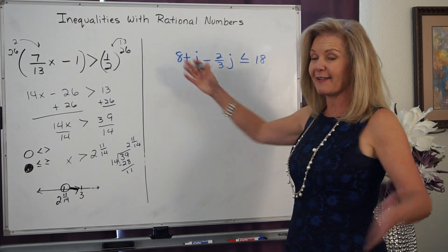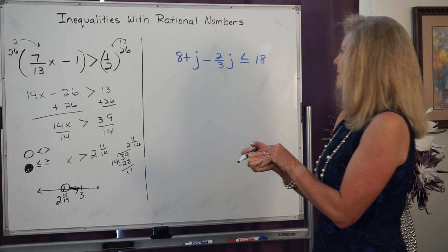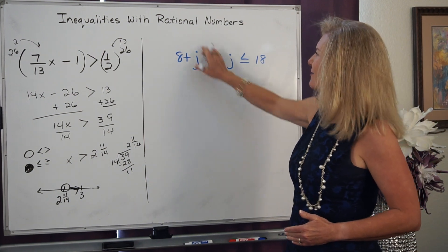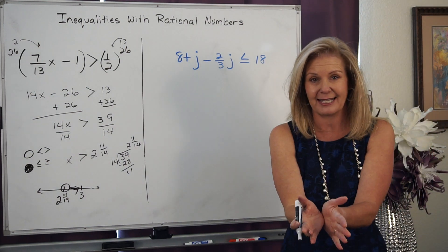Now, sometimes I've got to gather some like terms before I actually solve my inequality. So when I take a look at this side, I see I have a set of J's here and a set of J's there. And I've got to add those sets together.